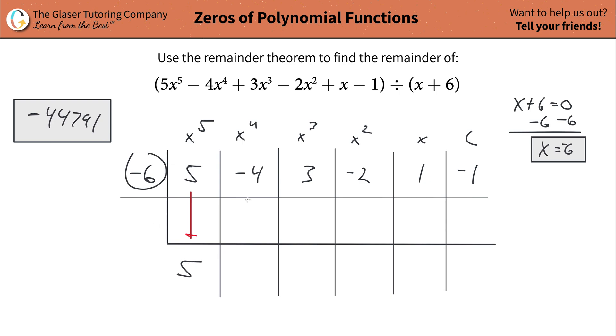Take the bottom number, 5, multiply it by the negative 6, and you're going to get negative 30. Plug that into the next column, add it together. So this should be negative 34. Then you're going to take negative 34 and multiply it by the negative 6. And you can plug in that result into the next column. And I think I'm going to use my calculator for this one. So negative 34, just to save a little time.